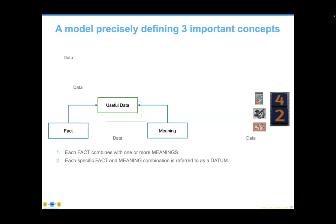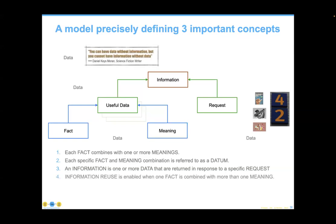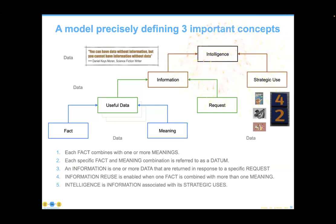What we really need to do is identify the subset of data that is actually useful — that's one of the major purposes of data management. Data is provided in response to a request; if somebody asks for something, it now turns into information. These are objective facts with no ambiguity, and it's a really useful definition. You can have data without information, but you can't have information without data. Intelligence — also known as wisdom or knowledge — is how information is used strategically.